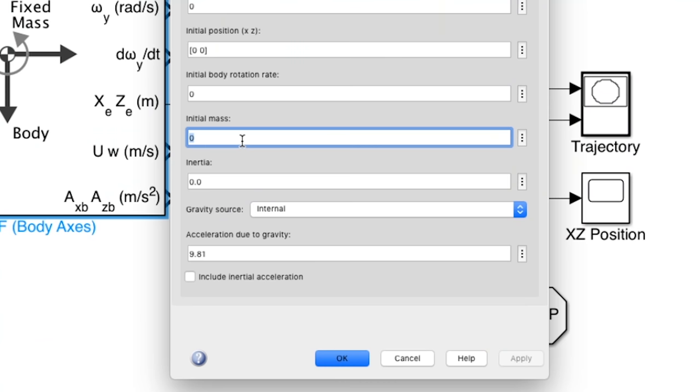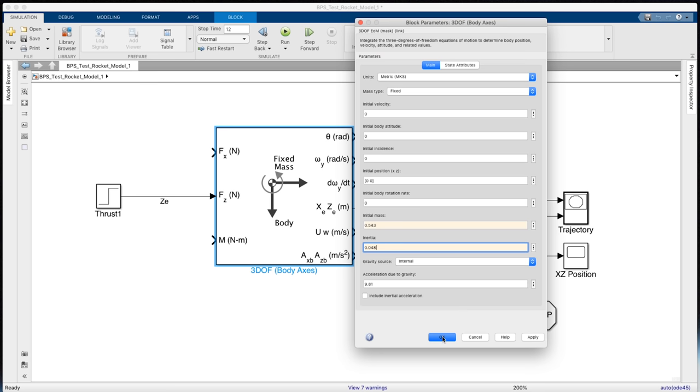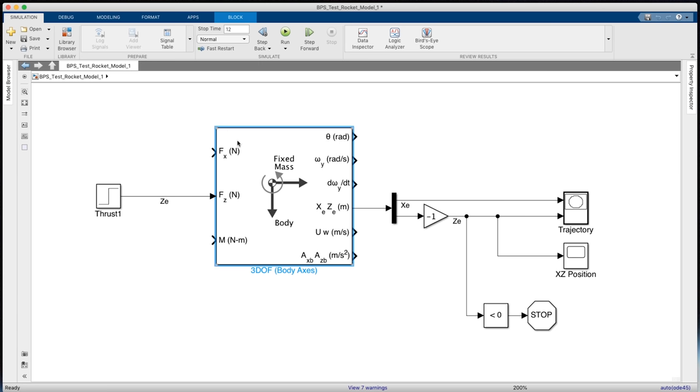I'm only going to change two for now. That's going to be our initial mass, which I'll set as 0.543. Remember that's the 543 grams that we weighed on the rocket, and our inertia, which was 0.048 kilogram meters squared. And so those are the units that these boxes take. With changing those, we're all set in this block.